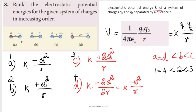For the first case, we apply the formula. 1 by 4 pi epsilon naught is constant. So it is K into Q into minus Q, giving minus Q squared divided by R.